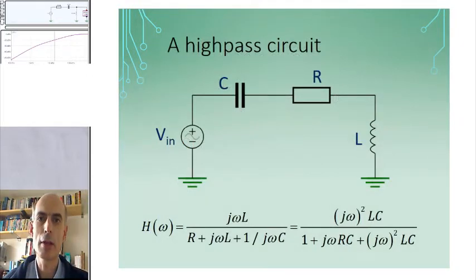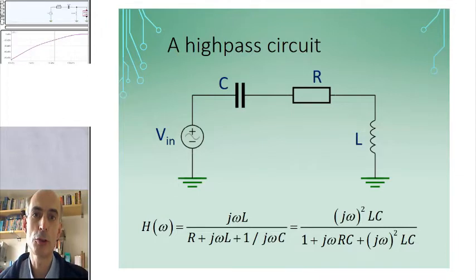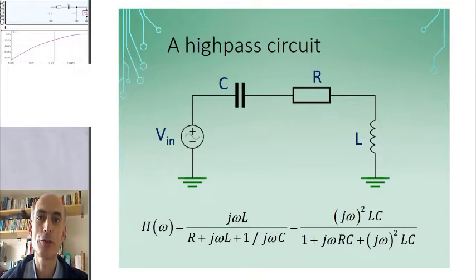You might remember that the low-pass filter we got when we took the output as the voltage across the capacitor, and the bandpass filter we got when we took the output as the voltage across the resistor.